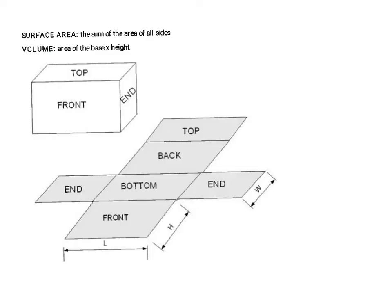First we're going to want to understand how surface area and volume are calculated. Surface area means that when you take a 3D solid figure and lay it out so you see the net, you find the area of each face and add them together — it's the sum of the areas of all the sides. Volume is calculated by taking the area of the base and multiplying it by the height to find how much room the solid figure takes up.